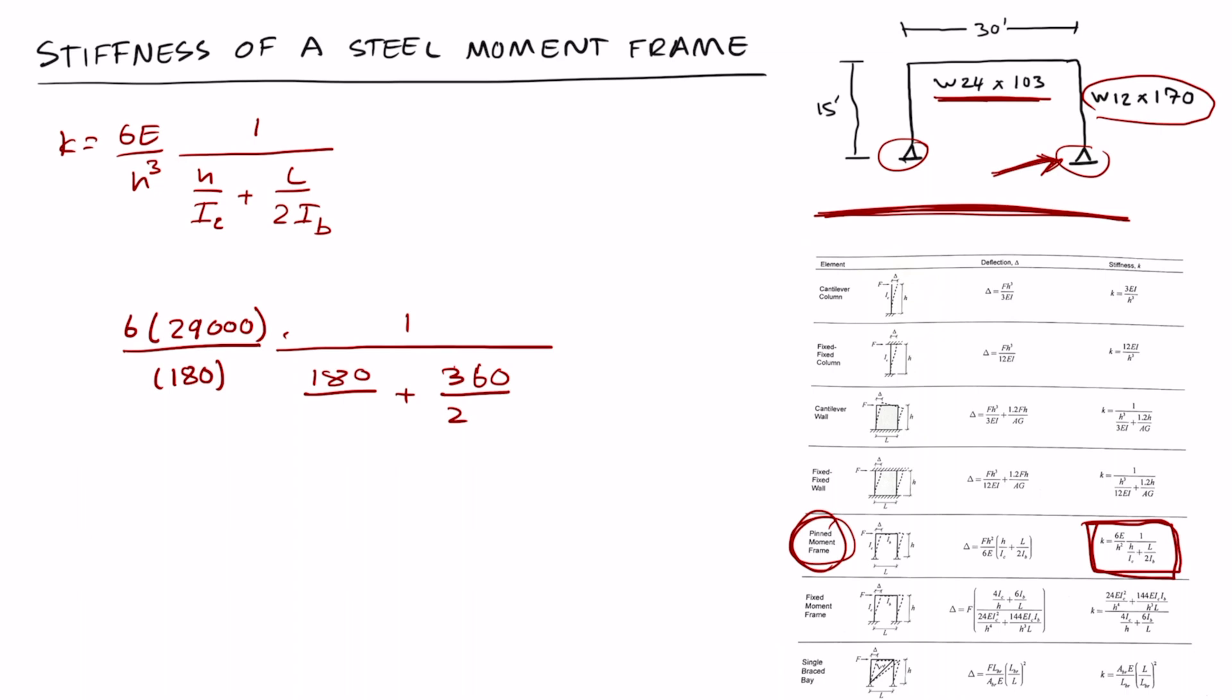We can look up the moment of inertia for the W12 by 170 and that's in the AISC steel construction manual. For a W12 by 170, I is 1650. And for the beam the moment of inertia for W24 by 103 is 3000. So basically all we have to do is plug all of this into our calculators and we'll get the stiffness of the steel moment frame which is 32 k over inches.